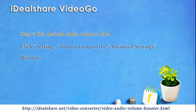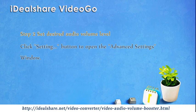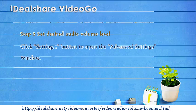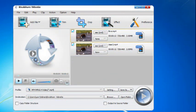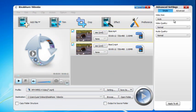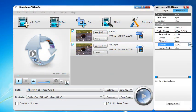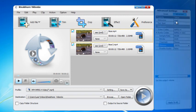Step 2: Set Desired Audio Volume Level. Click the Setting button to open the Advanced Settings window. Click the Advanced tab, then go to the Audio column. Click the 100% tab on the right side of Volume to select a Volume Ratio from the drop-down list. To set a higher or lower volume, simply overwrite the original value with your desired volume ratio, like 20%, 500%, or 600%.